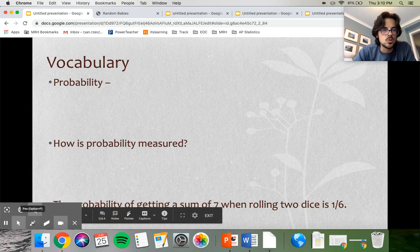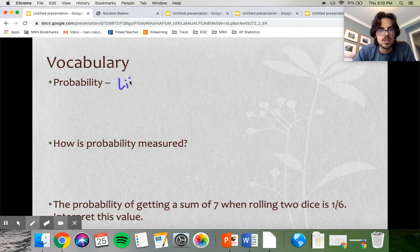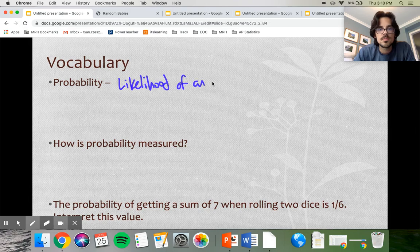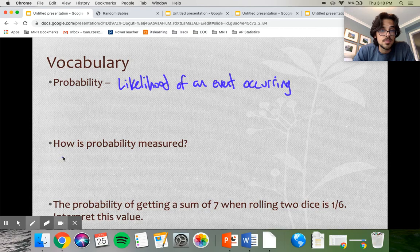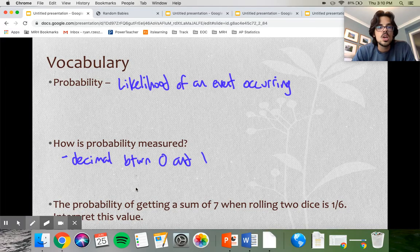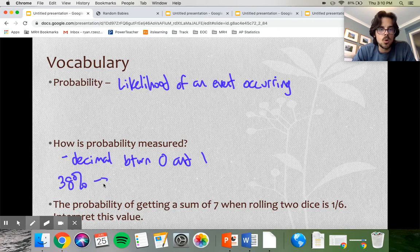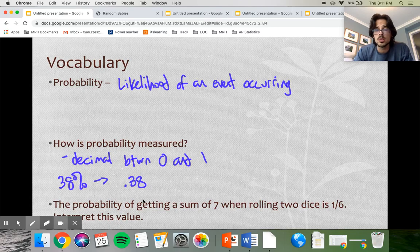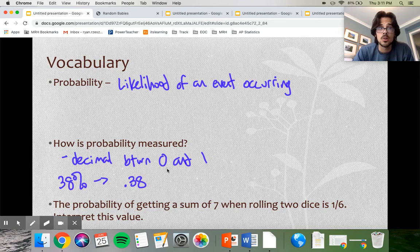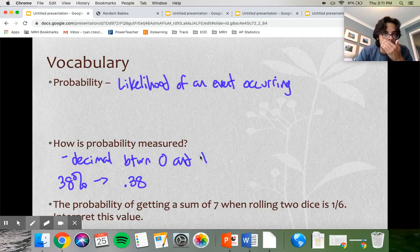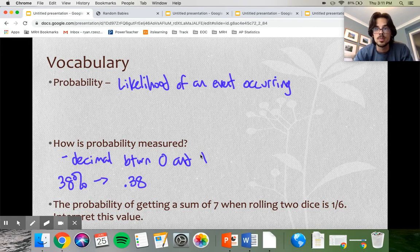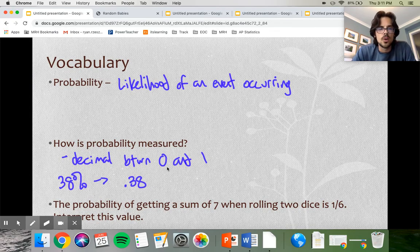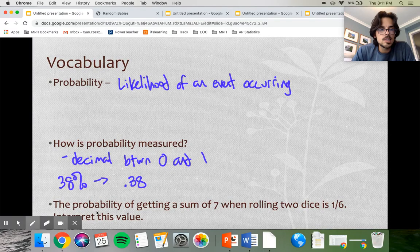Let's introduce some basic vocab that you guys are probably pretty used to already. Probability is the likelihood of an event occurring. How is probability measured? Most of the time, the vast majority of the time in AP Stats, we want a decimal between 0 and 1. So usually if we have a 38% like in the last problem, we're always going to want to turn that into 0.38. A probability of 0 would mean something is impossible. Probability of 1 means it will definitely happen.